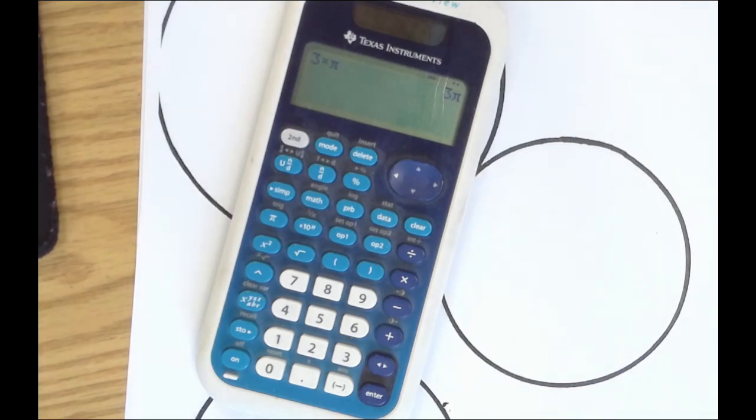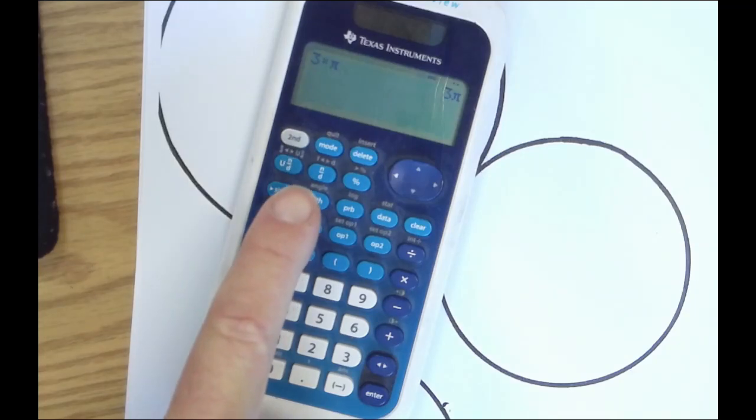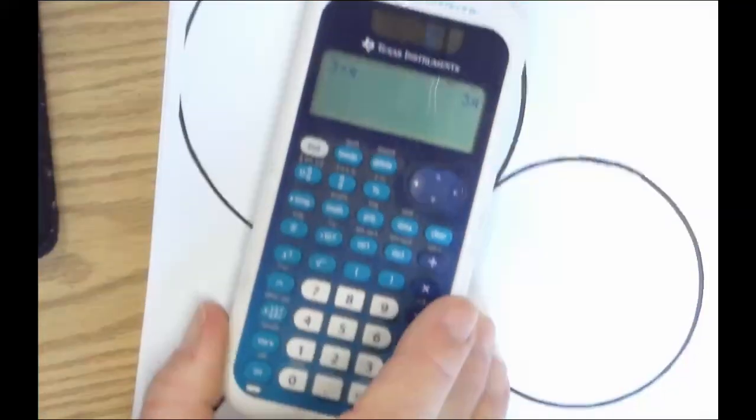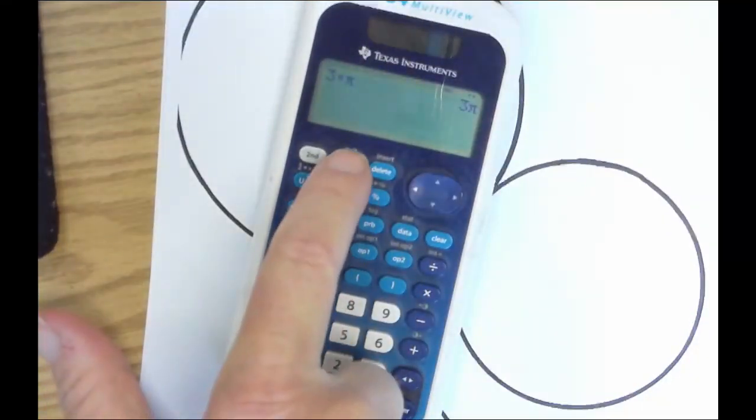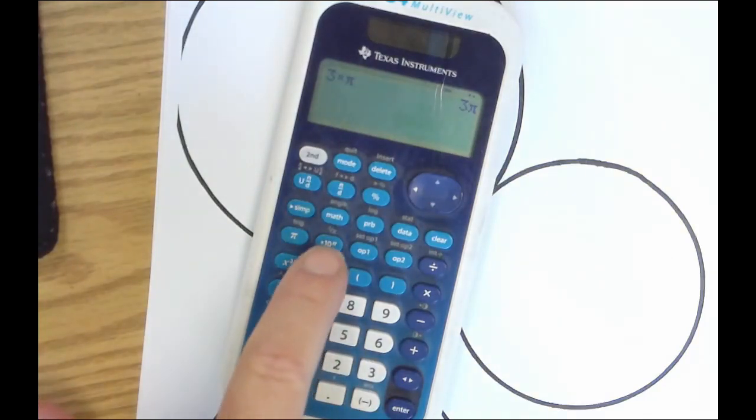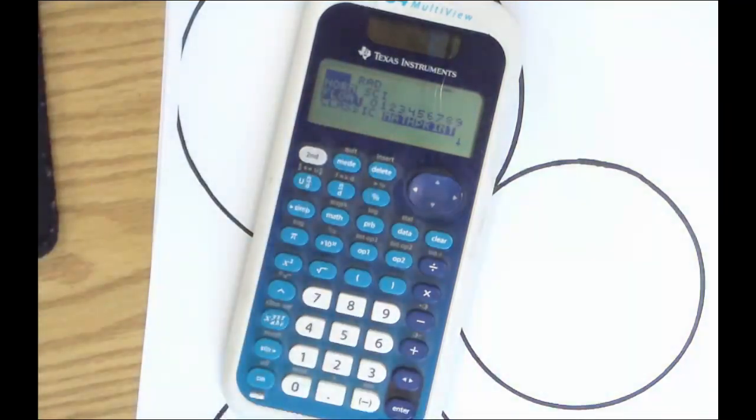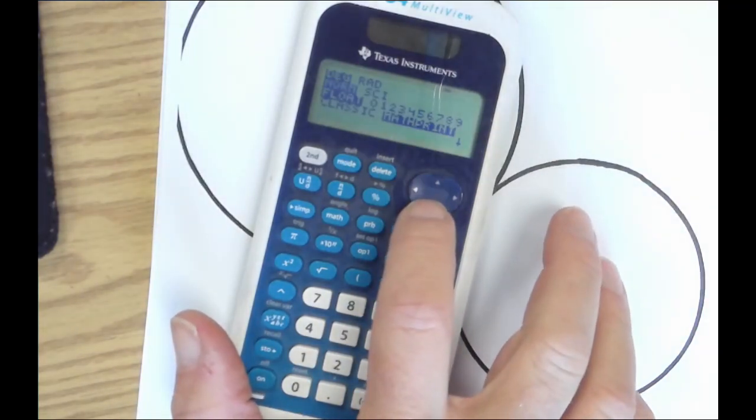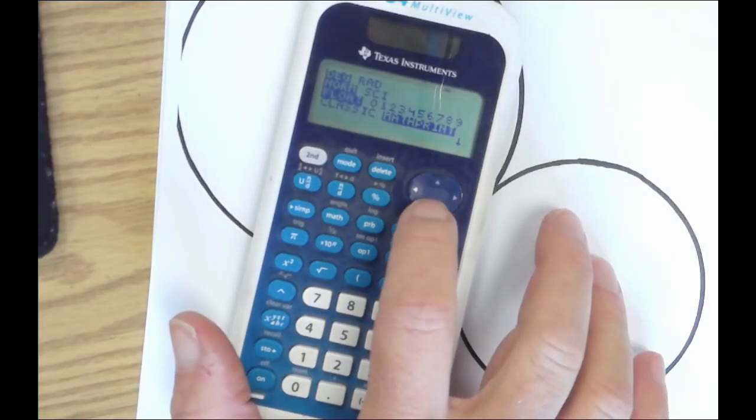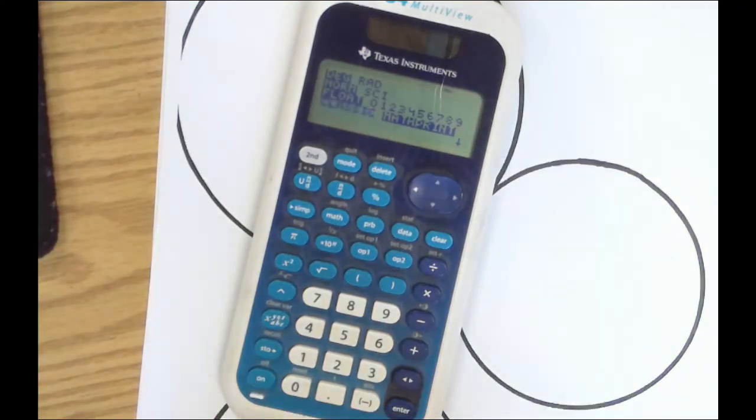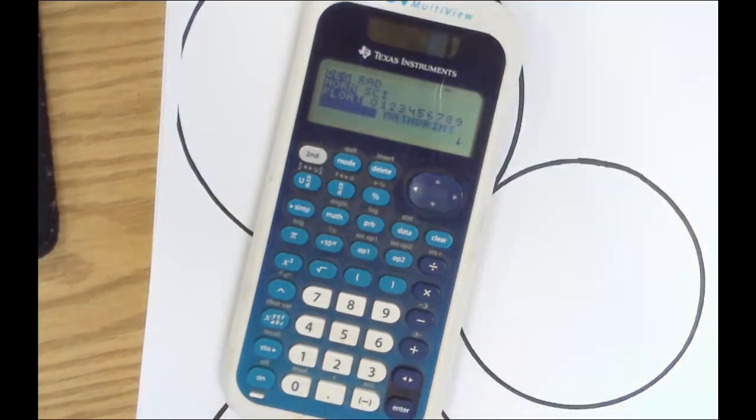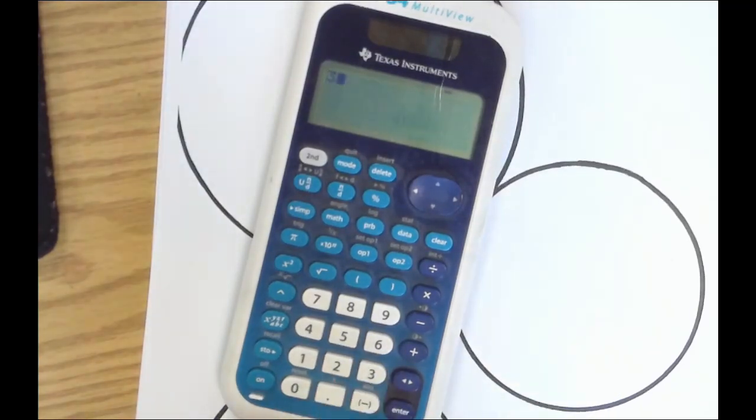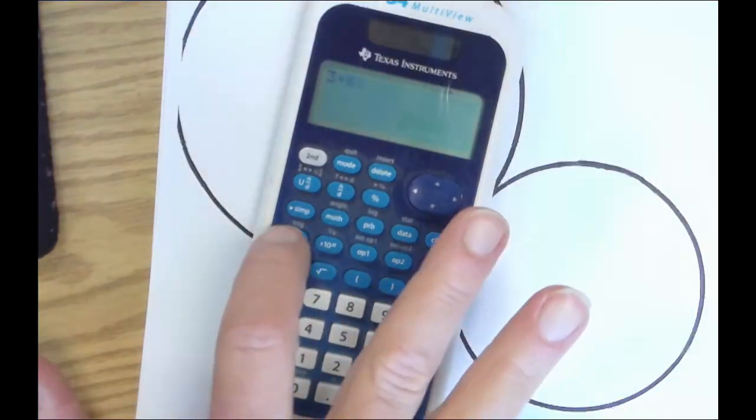You take your little finger and hit the mode button. Go up to seven, up to mode, and look at the bottom. We arrow down, wait for the flash, wait for the flashing thing, and it says classic. Hit enter, boom.